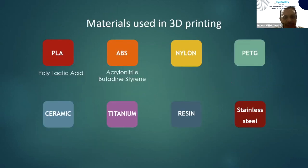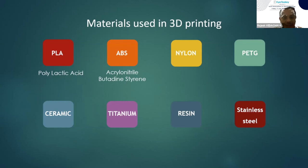You can print with various materials depending on the property of the object you want. If you use PLA, it is for rapid prototyping but it will be a bit brittle. If you want a durable substance, you should go for ABS, and if you want implants which should be very strong, then go for titanium implants. There are also flexible materials which help you obtain objects such as tires or any flexible objects.